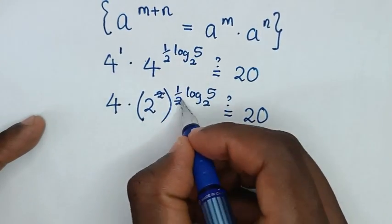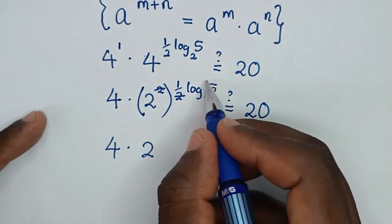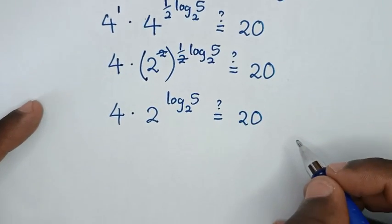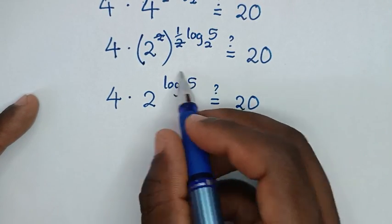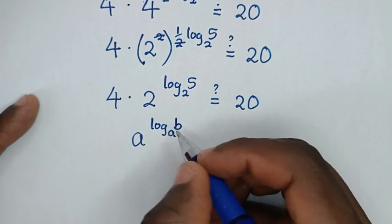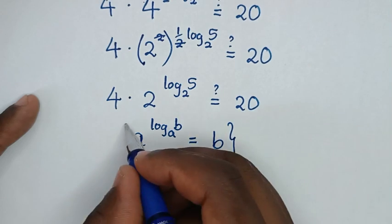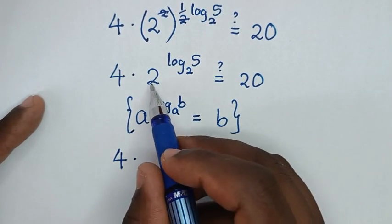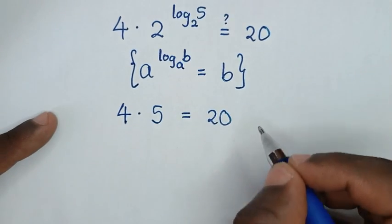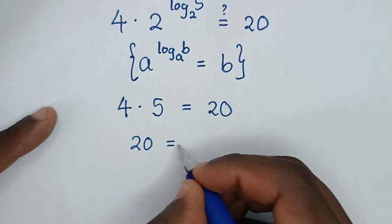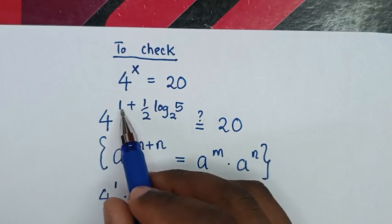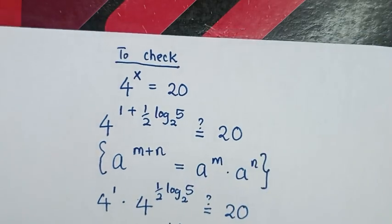Simplifying, 4 power 1 is 4, and the half in the exponent cancels the base-4 to give 2 power of log of 5 base 2. Using the logarithmic rule that a power of log of b base a equals b, we get 2 power of log of 5 base 2 equals 5. So we have 4 times 5, which is 20, equal to 20. Left side and right side are equal, confirming the answer is true. The value of x is 1 plus one half log of 5 base 2.